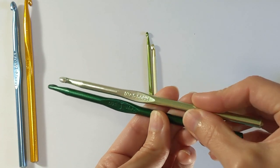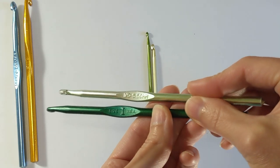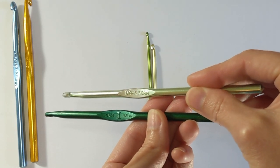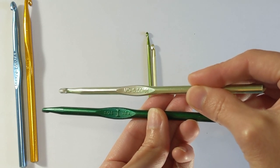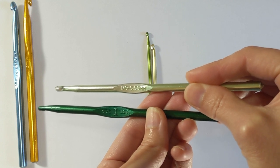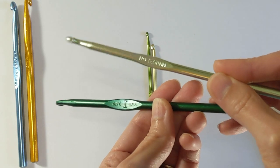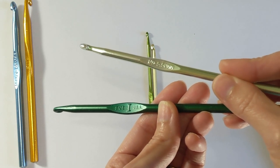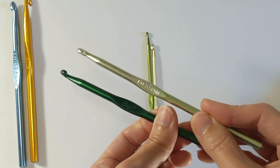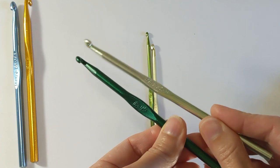The other clue might be in how it is labeled. In the modern hook we have the size I and then the number nine for the American crochet hook sizing, and it also has the millimeter size. But on the vintage hook it only has the letter name.